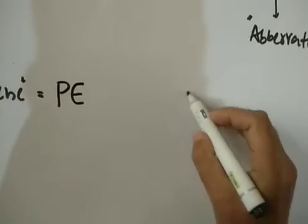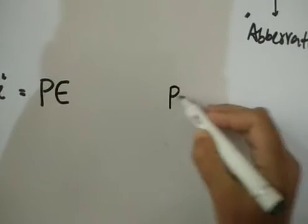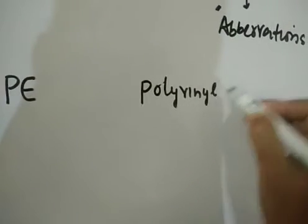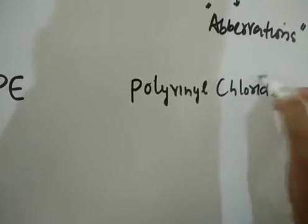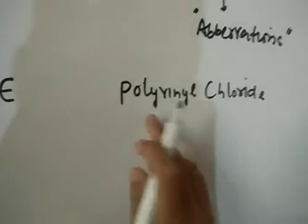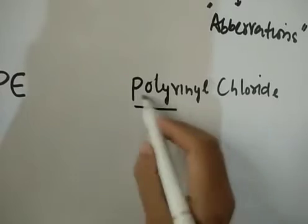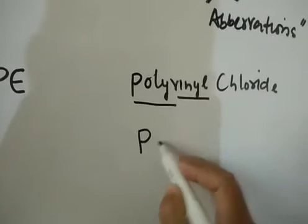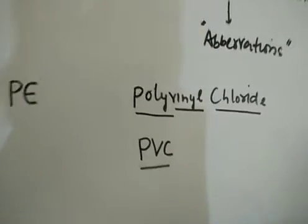Take example of polyvinyl chloride. The source-based name is polyvinyl chloride. Here there are three syllables: poly, vinyl, chloride. Poly - take the first alphabet P, vinyl take V, chloride take C. So this is your trade name, that's PVC.